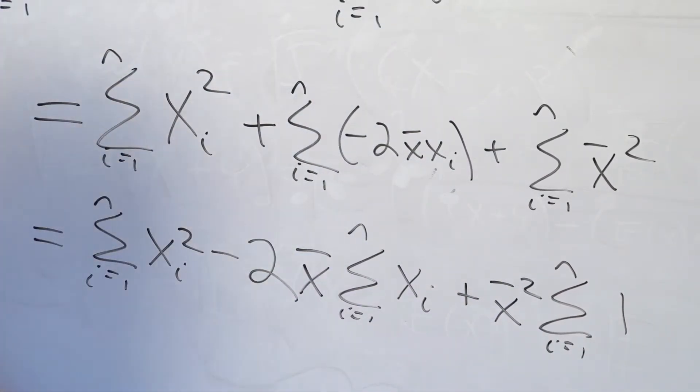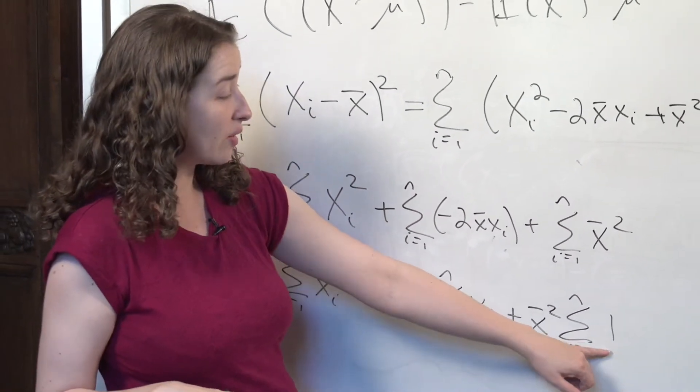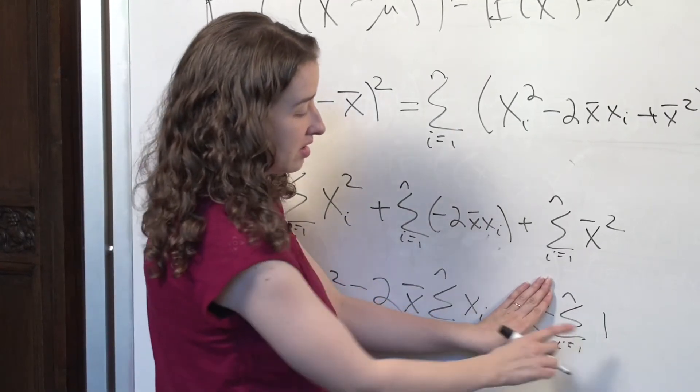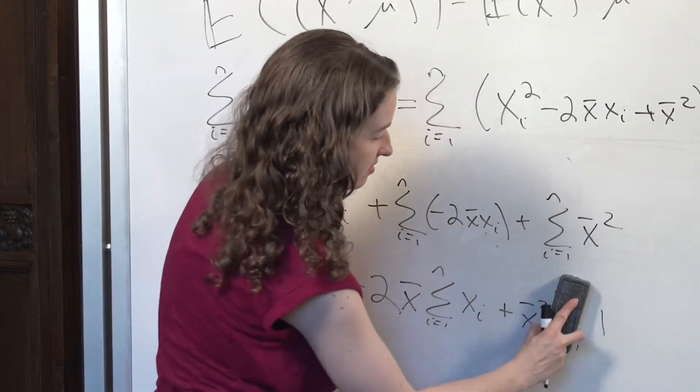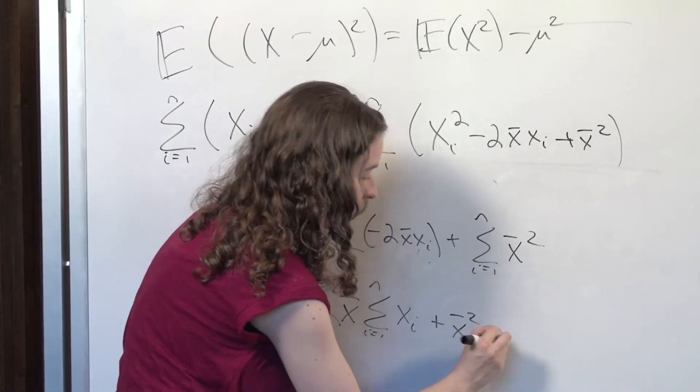But just like I did in the parallel case where I took a mu squared out of an expectation operator, now I've taken an x bar squared out of a sum. If you add up the number 1 n times, you just get n. So this goes away, and I'm left with just an n right here.